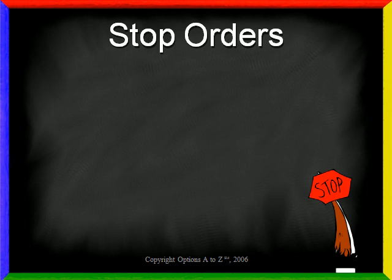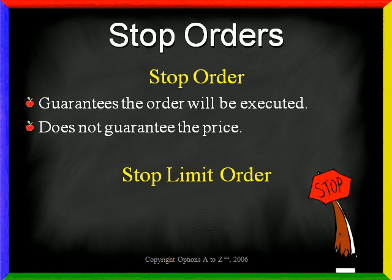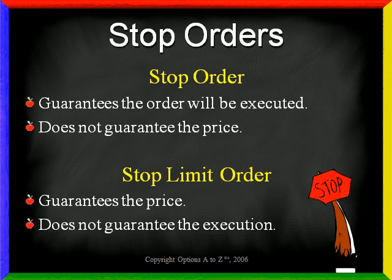The two basic types of stop orders I'll be talking about today are the regular stop order as well as the stop limit order. If you place a stop order it will guarantee that your order will be executed, however it will not guarantee the price you'll receive. On the other hand if you place a stop limit order it guarantees the price you'll receive but it cannot guarantee the execution.